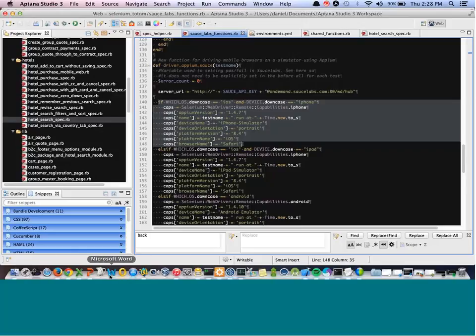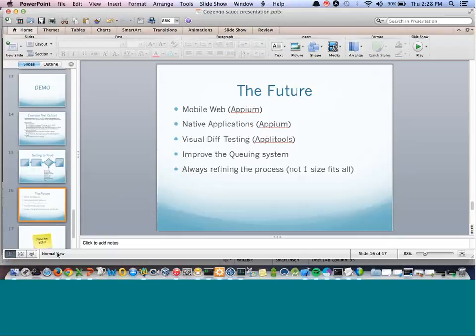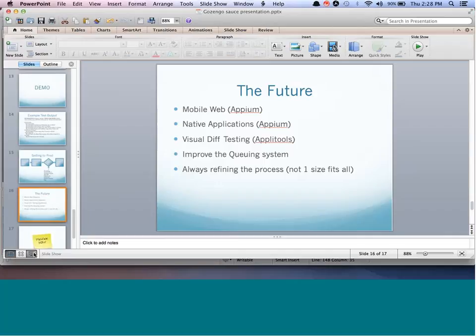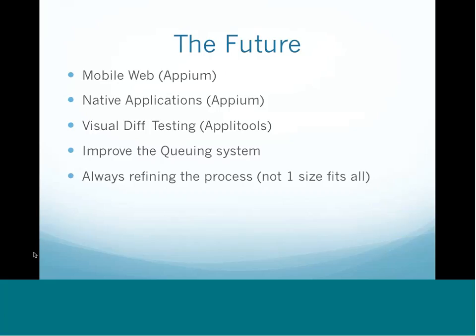Another thing we want to get to in the future is testing on native applications, again using Appium. That's a bit more difficult because native applications are a different beast. We don't actually have a native app right now — that's down the road. But when we do, the idea would be to have a separate test repository working specifically with Appium, with code broken out for both iOS and Android.